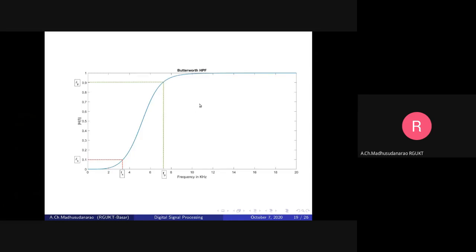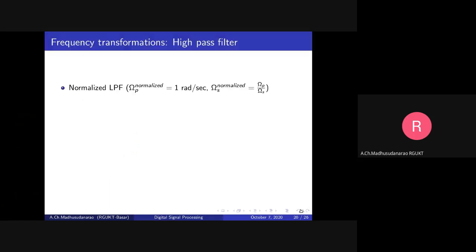Now let's look at the Butterworth high pass filter. This is a high pass filter with passband cutoff frequency F_P — the minimum required passband gain. After F_P, the passband gain is always above Delta_P. The stopband cutoff frequency is before which the gain is always less than Delta_S. Let's see the frequency transformations for a high pass filter.